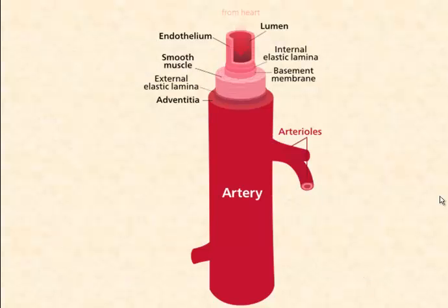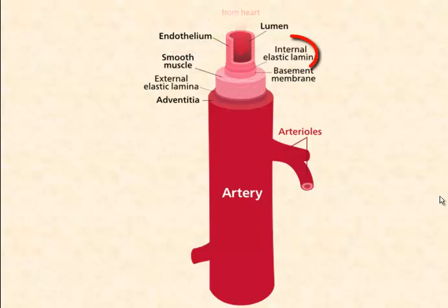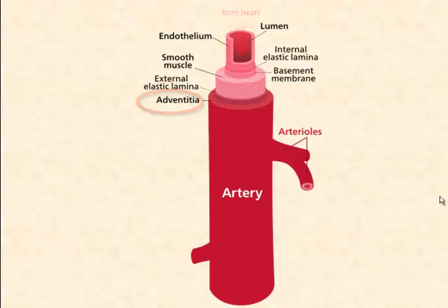Arteries are made up of three layers: an inner layer known as the endothelial layer; the middle layer, which is elastic and muscular — it allows expansion with each heartbeat as a high volume of blood moves through; and the third layer, the outer layer, which is inelastic and limits stretching so that the blood vessel doesn't overstretch.